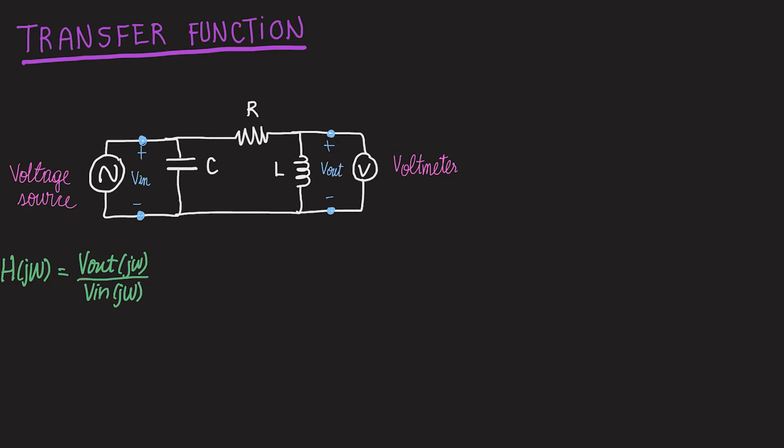Before getting the transfer function though, we have to simplify the circuit a little bit. Remember that the voltage source can be replaced by a short circuit because its ideal impedance is zero, and the voltmeter can be replaced by an open circuit because its ideal impedance should be very large.